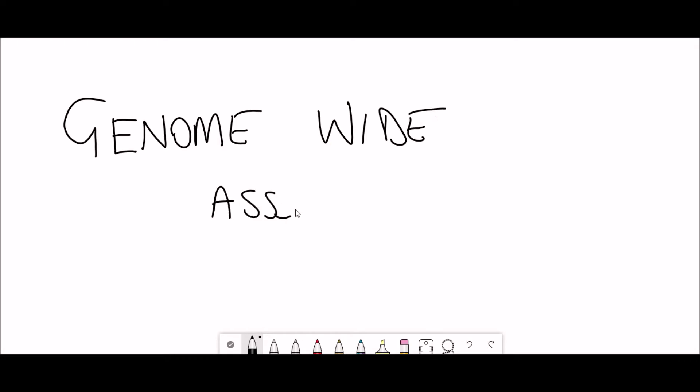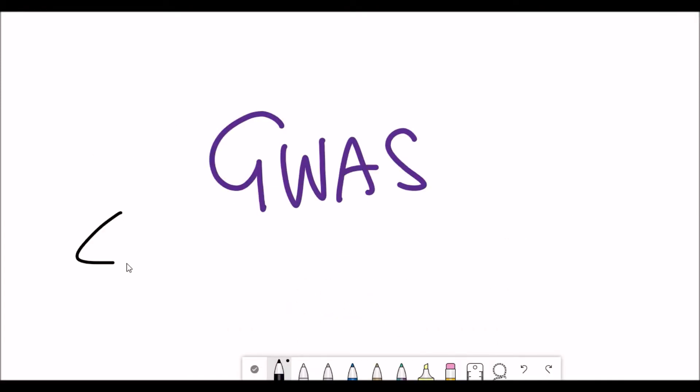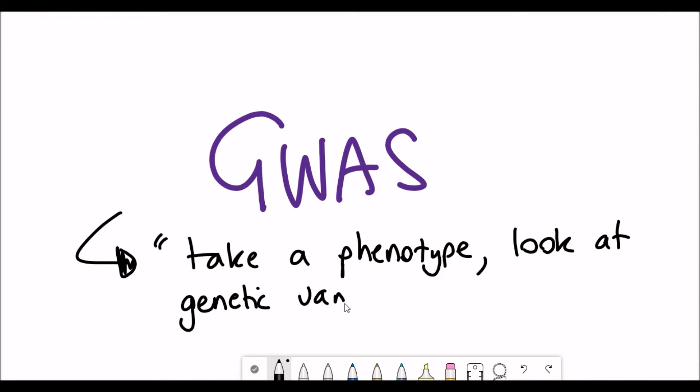So how can you actually study genetic variants involved in aging? You can do genome-wide association studies. Now I've already done an entire video about genome-wide association studies, what they are and their pros and cons. But to briefly summarize, they are studies whereby you can take a phenotype, in this case aging, and look at genetic variants that are associated with that phenotype.